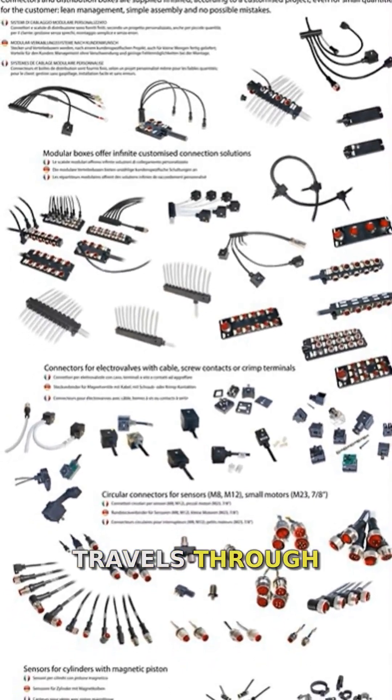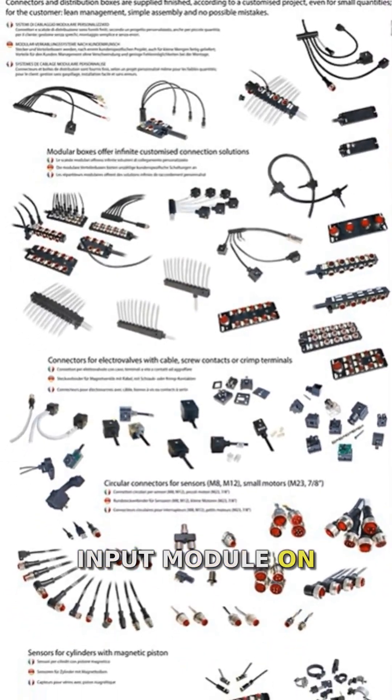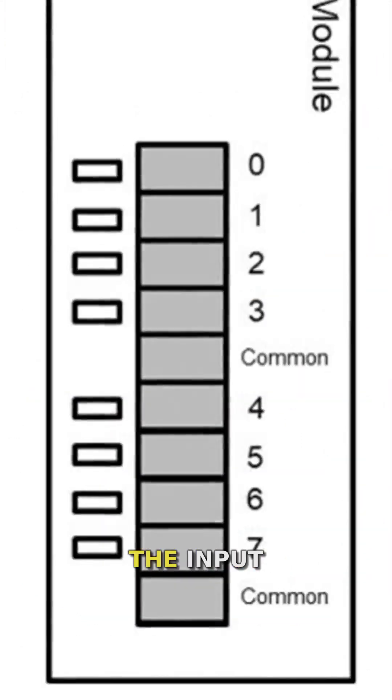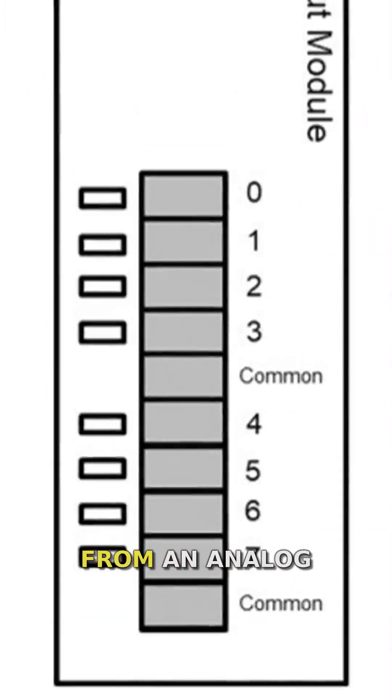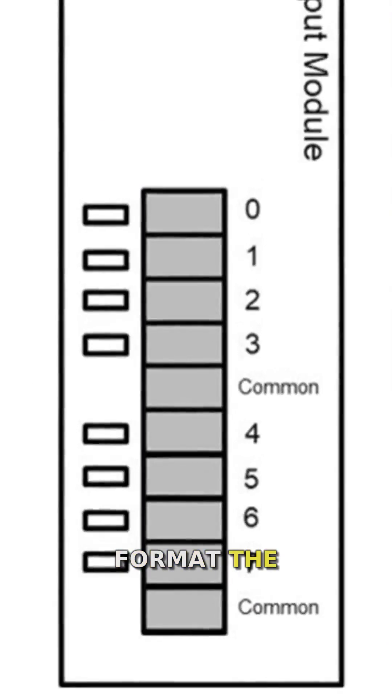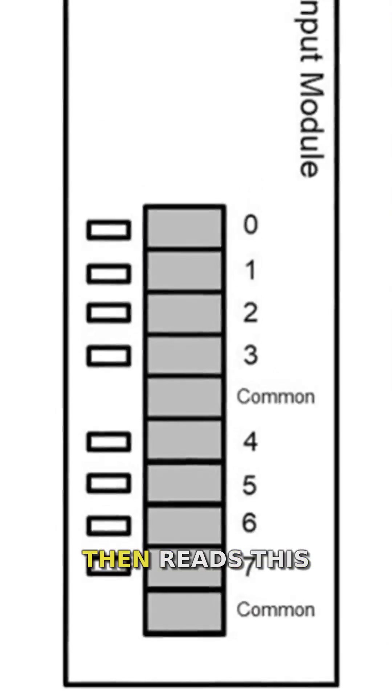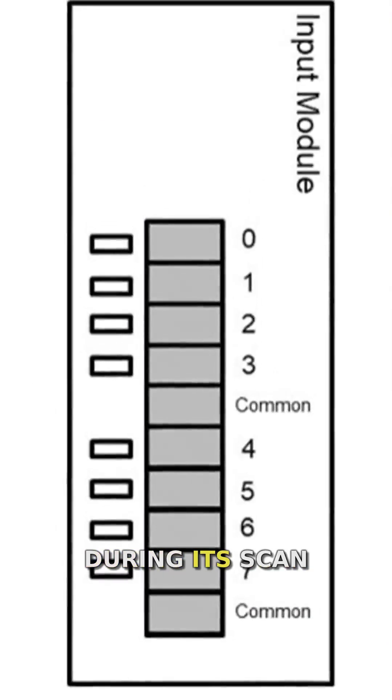This signal travels through wiring to an input module on the PLC. The input module conditions the signal, often converting it from an analog to a digital format. The PLC's processor then reads this digital input during its scan cycle.